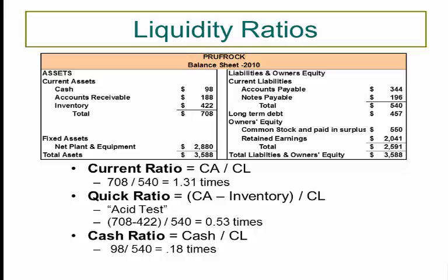How high of a number would you want? Here you see 1.31 times. You want this number above one, but not maybe too high, because that's extra current assets that may not be used as efficiently as possible—they could be invested in a long-term project that might generate more value for the company. But let's say you are a car company and one of your suppliers is about to go on strike. You might buy up a whole lot of inventory just to make sure you are covered in the meantime in case a strike happens, and so that could make sense.